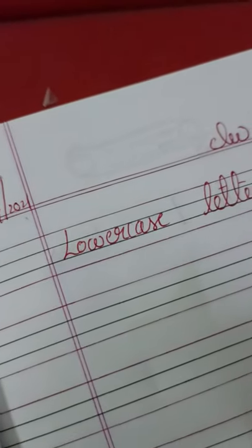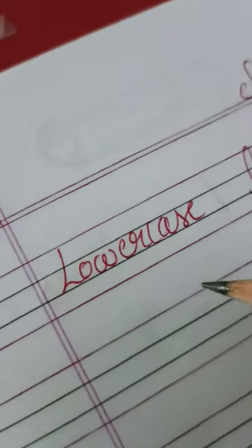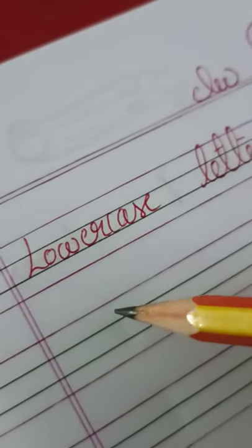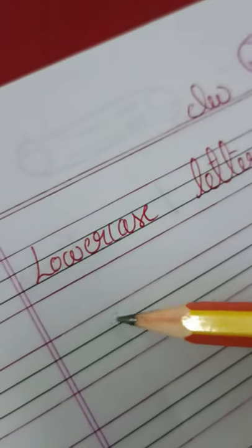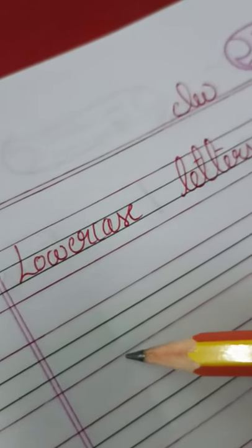Now, today we are going to write lowercase letters A to L, okay? Come and start writing here. How many lines are there here? Yes, four lines. First red line, first black line, second black line and last red line, okay?